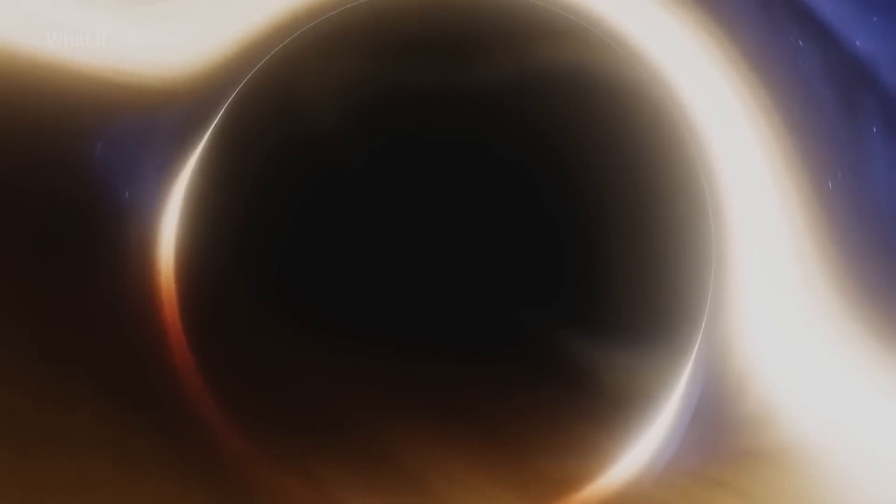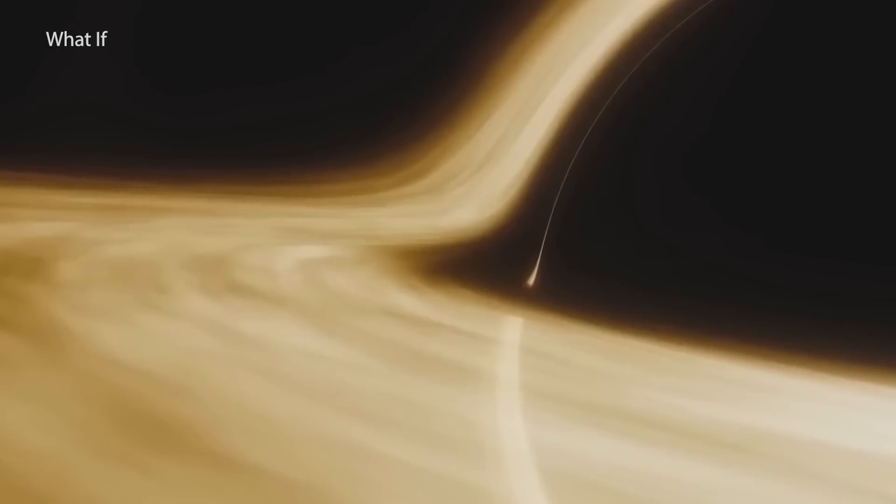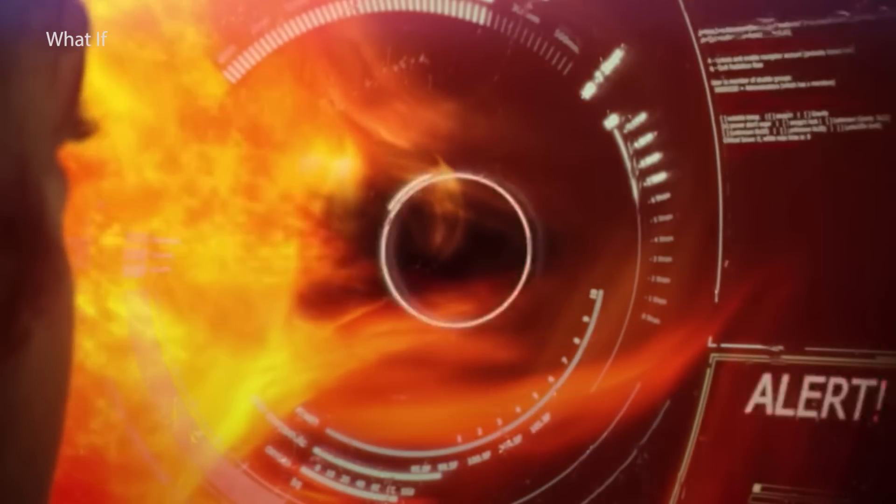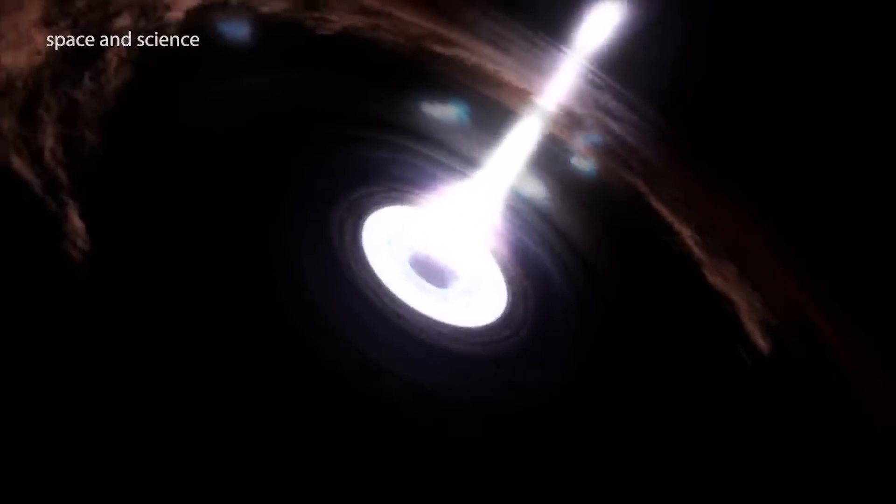The mass and size of a black hole dictate its category. The tiniest among them are referred to as primordial black holes. These minuscule cosmic oddities may be as small as a lone atom, yet possess the mass of a colossal mountain. The most prevalent variety, the medium-sized stellar black hole.